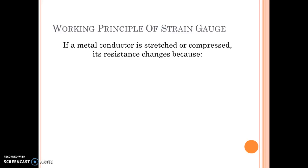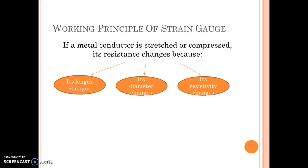Now let's have a look at working principle of strain gauge. If a metal conductor is stretched or compressed, its resistance changes. I repeat, if a metal conductor is stretched or compressed, its resistance changes. Why? There are three reasons. Because maybe its length changes, its diameter changes, its resistivity also changes.